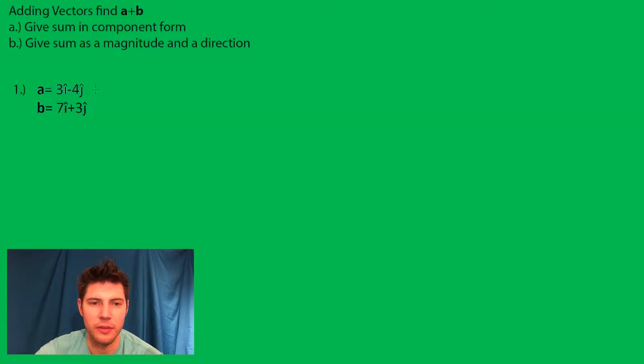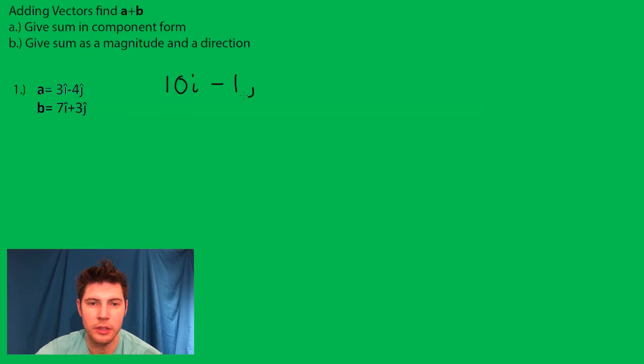So 3 plus 7 is 10i, and negative 4 plus 3 is negative 1j. And there's the answer to part a.